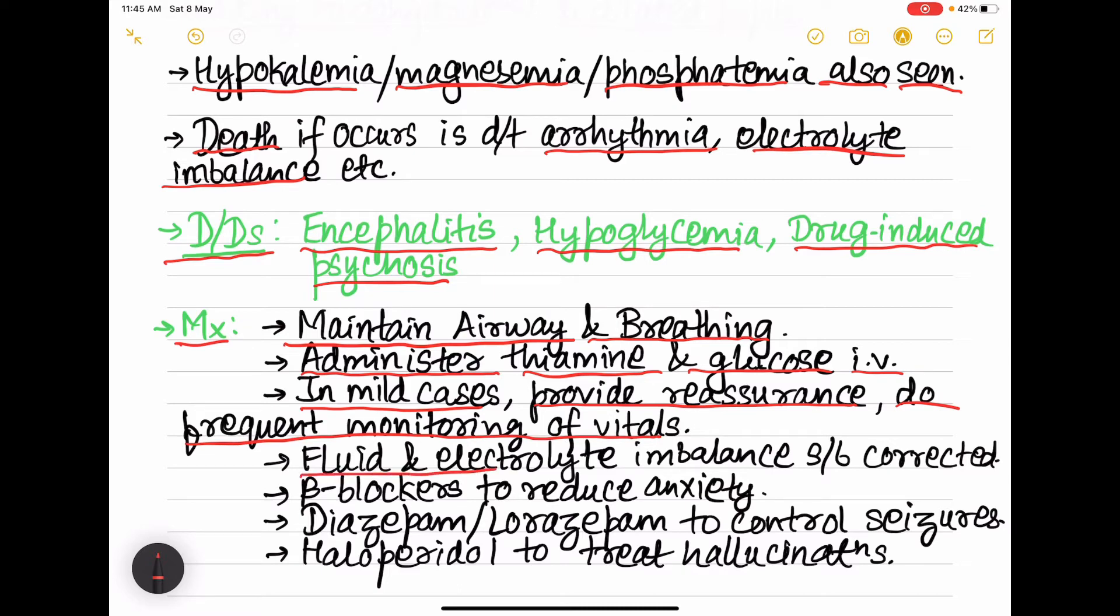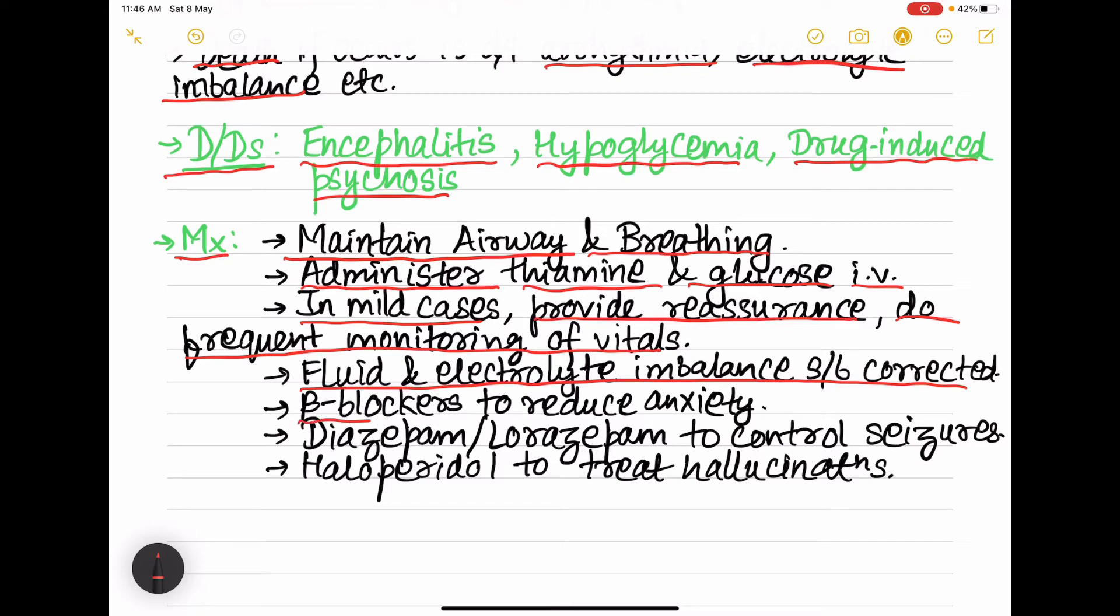Then fluid and electrolyte imbalance should be corrected. Then beta blockers are given to reduce the anxiety and also to reduce tremors. Then diazepam or lorazepam is given to control the seizures. Most commonly we use lorazepam. And haloperidol is given to treat the hallucinations.